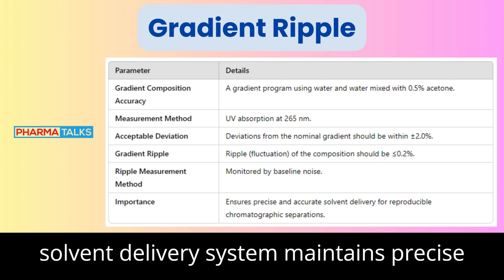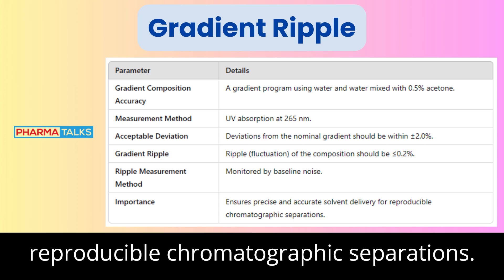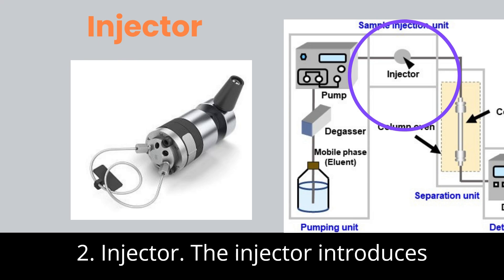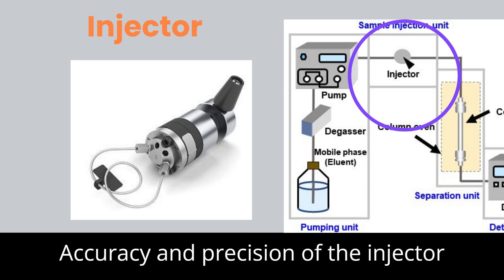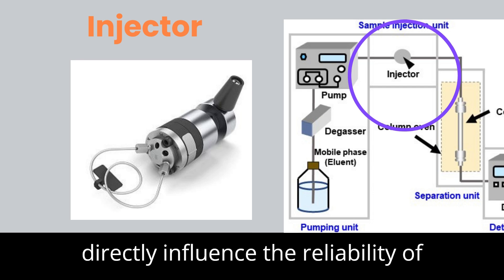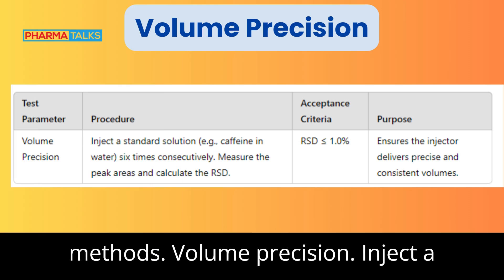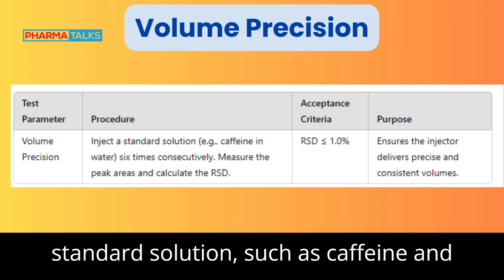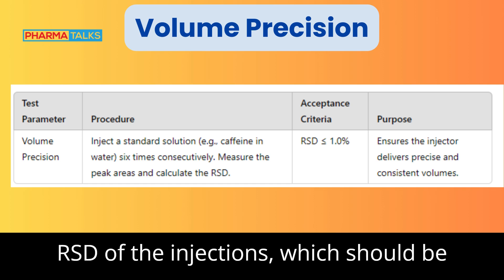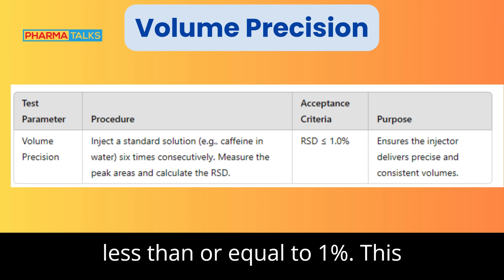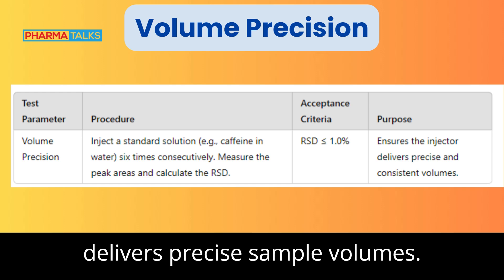These tests ensure that the solvent delivery system maintains precise and accurate flow, which is critical for reproducible chromatographic separations. 2. Injector. The injector introduces the sample into the HPLC system. Accuracy and precision of the injector directly influence the reliability of quantitative results. Volume Precision: inject a standard solution, such as caffeine in water, six times consecutively. Measure the peak areas and calculate the RSD of the injections, which should be less than or equal to 1%.